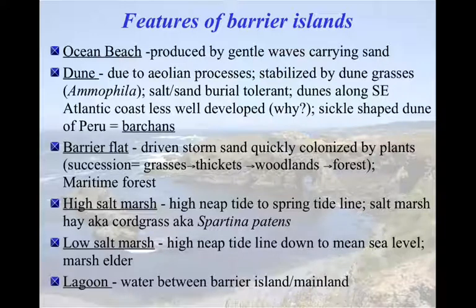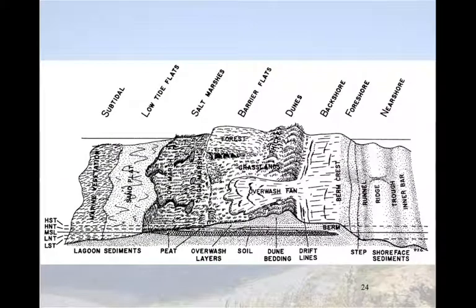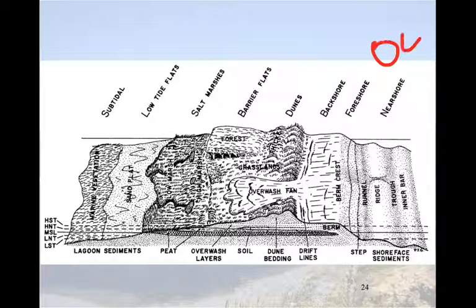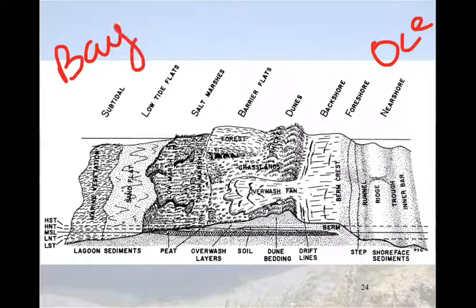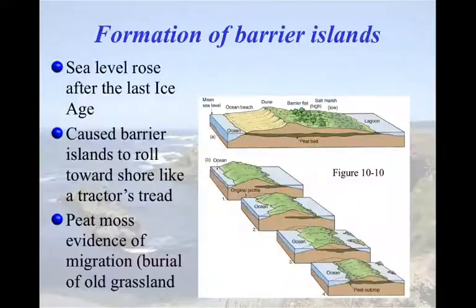When you emerge from the forest on the other side, you'll encounter the low salt marsh, then the high salt marsh dominated by Spartina patens, all the way down to the lagoon or mud flat. In a cross-sectional picture, oceanside is on one side and bay is on the other, and you encounter all of these features as you walk across. The formation of barrier islands will be covered in the next video.